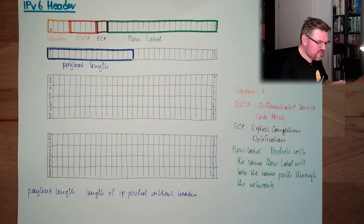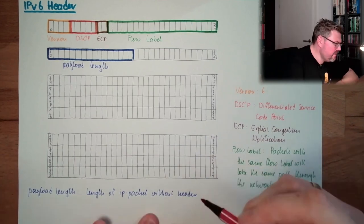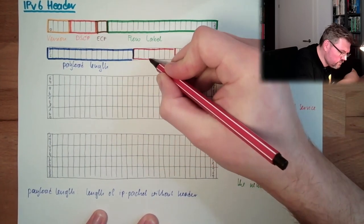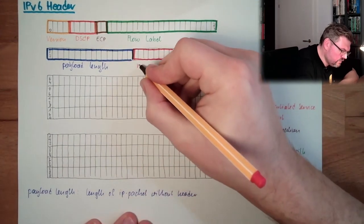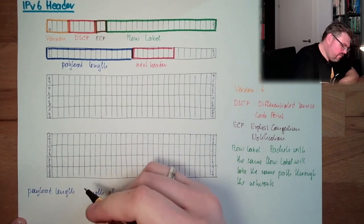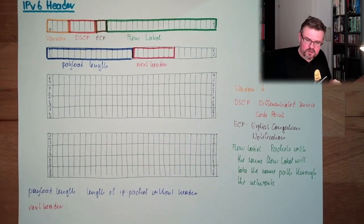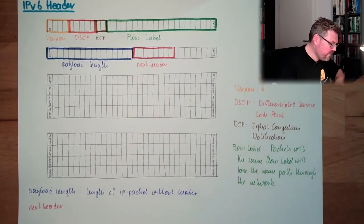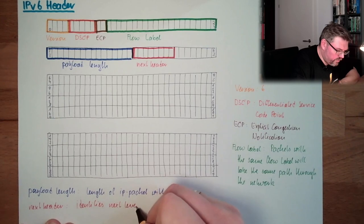And then we have something which somehow belongs together, this is a next header. Next header, 8-bit. Next header. So in there, there's written a number. We talked about this. Identifies the next layer protocol. Here, this is pretty much this field here in IPv4, protocol field, number of protocol of upper layer. Identifies next level protocol. All the same numbers.